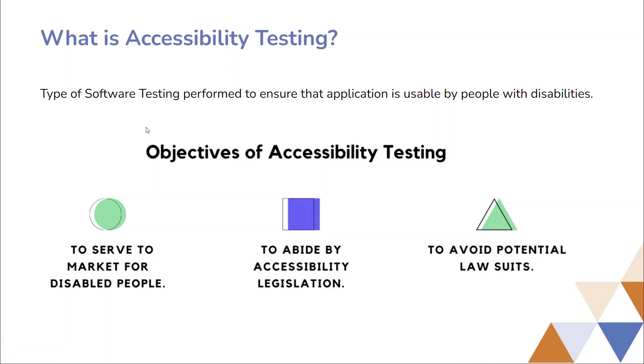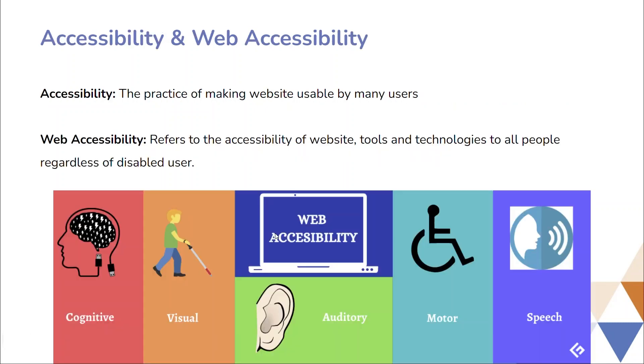There are some objectives of accessibility testing: to serve the market for disabled people, to abide by accessibility legislation, and to avoid potential lawsuits.